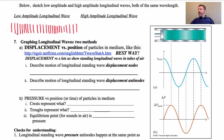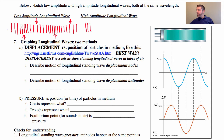Here is a compression, here's another compression, and rarefactions right here. Now we're going to draw a high amplitude longitudinal wave — both the compressions and rarefactions are more extreme. So with equilibrium like this, the compression for the high amplitude wave would be very squished together, and the rarefaction would be very spread apart, then a compression again very squeezed together, and then another rarefaction very spread apart.